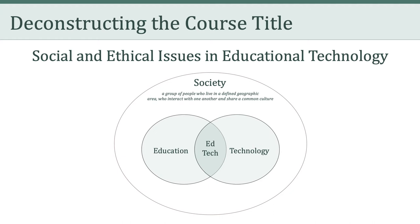Stepping back, we might think about this diagram as a sort of system. And, like any complex system, a change to one component can impact all of the other components in that system. Importantly, these impacts aren't always clear or predictable — they aren't all good or all bad, and reality is much more nuanced. In LTCH 676, it will be our job to reflect on this system and how specific educational technologies have affected and are affecting the social and ethical problems of our time.